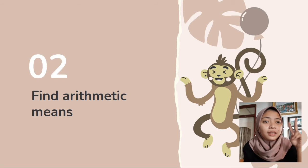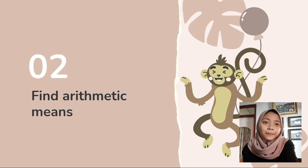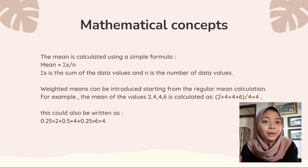The second thing is find arithmetic means. Mathematical concept: The mean is calculated using a simple formula: mean = Σx/n. Σx is the sum of the data values, while n is the number of data values.